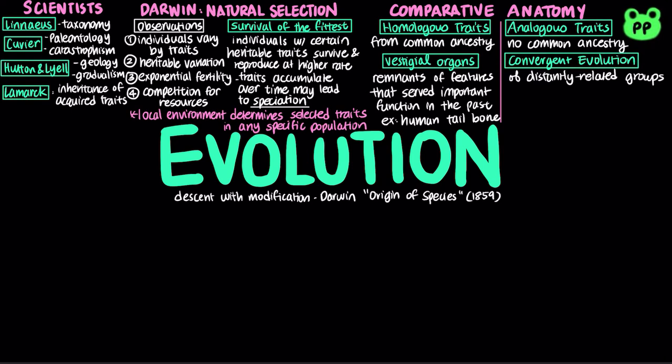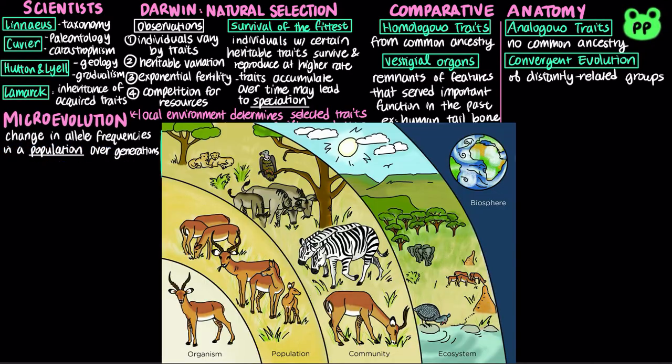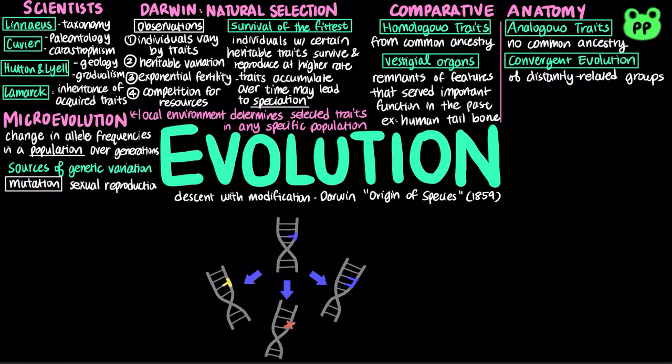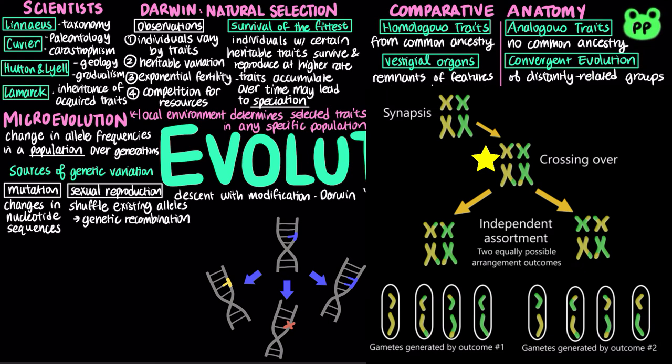Natural selection acts on individuals, but only populations evolve. Microevolution is a change in allele frequencies in the population over generations. A population is a localized group of individuals capable of interbreeding and producing fertile offspring. The ultimate sources of genetic variations are mutation and sexual reproduction. Mutations refer to changes in nucleotide sequence of DNA, which cause new genes and alleles to arise, whereas sexual reproduction can shuffle existing alleles into new combinations through genetic recombination or crossing over and independent assortment of different pairs of homologous chromosomes during meiosis.